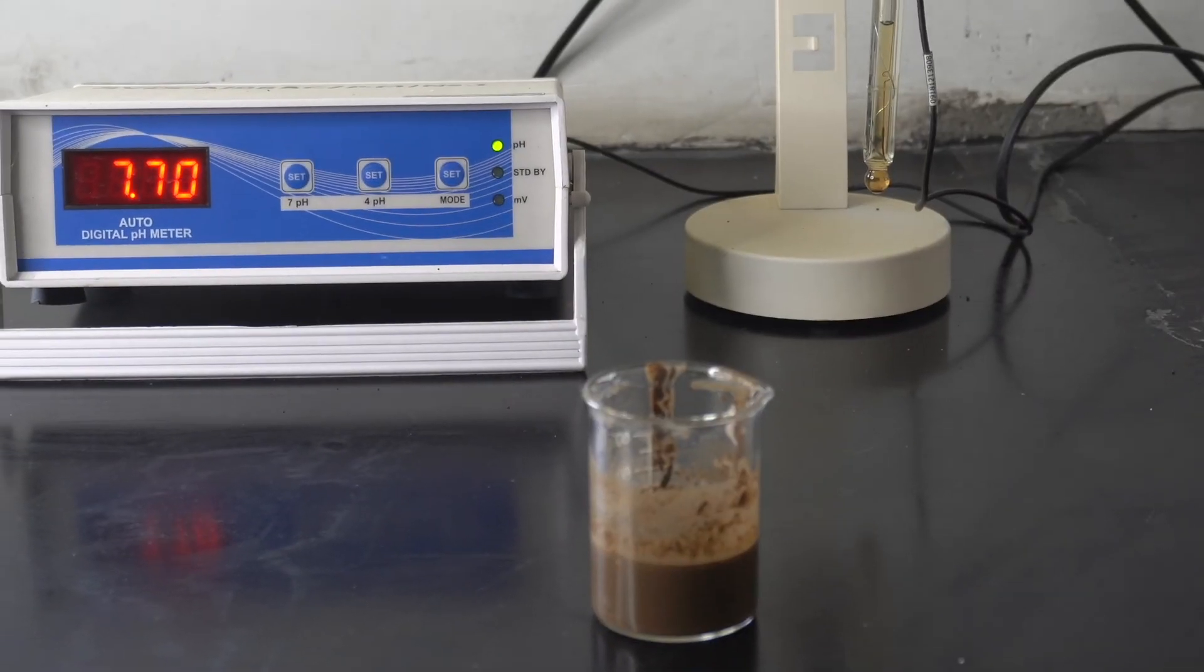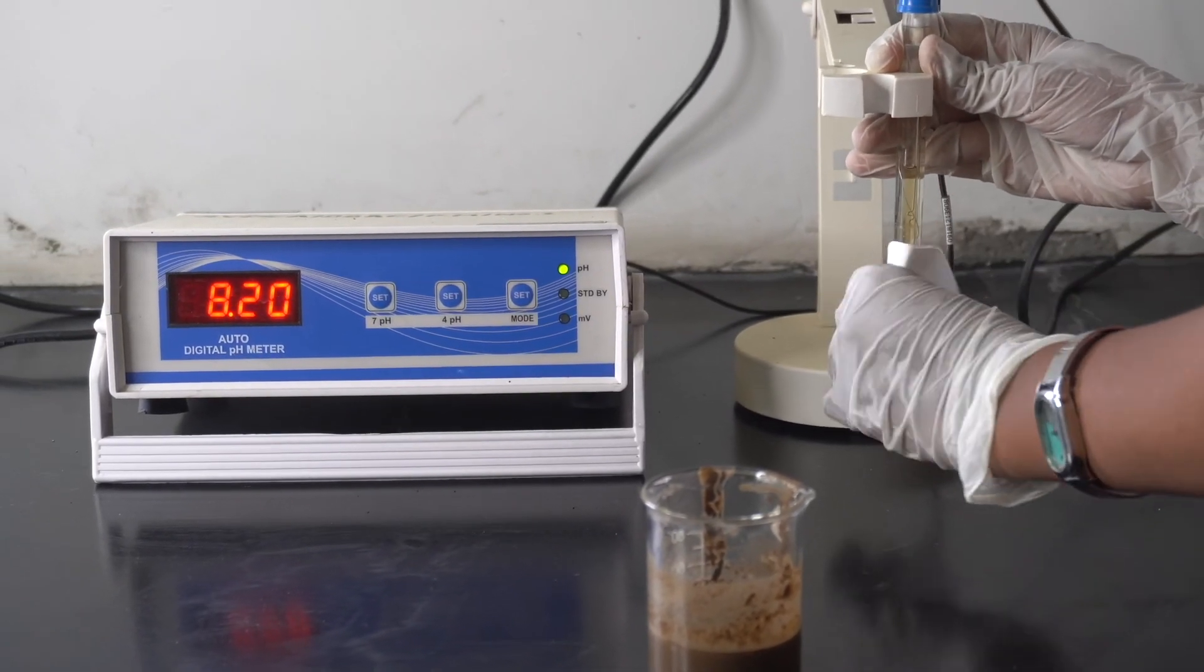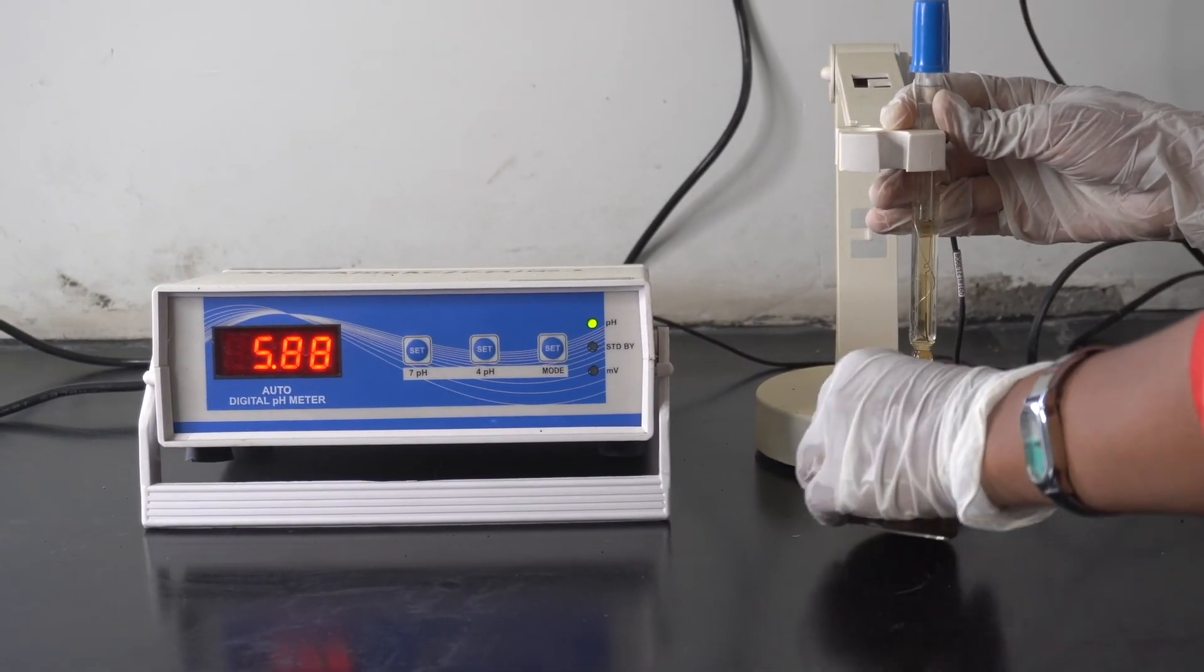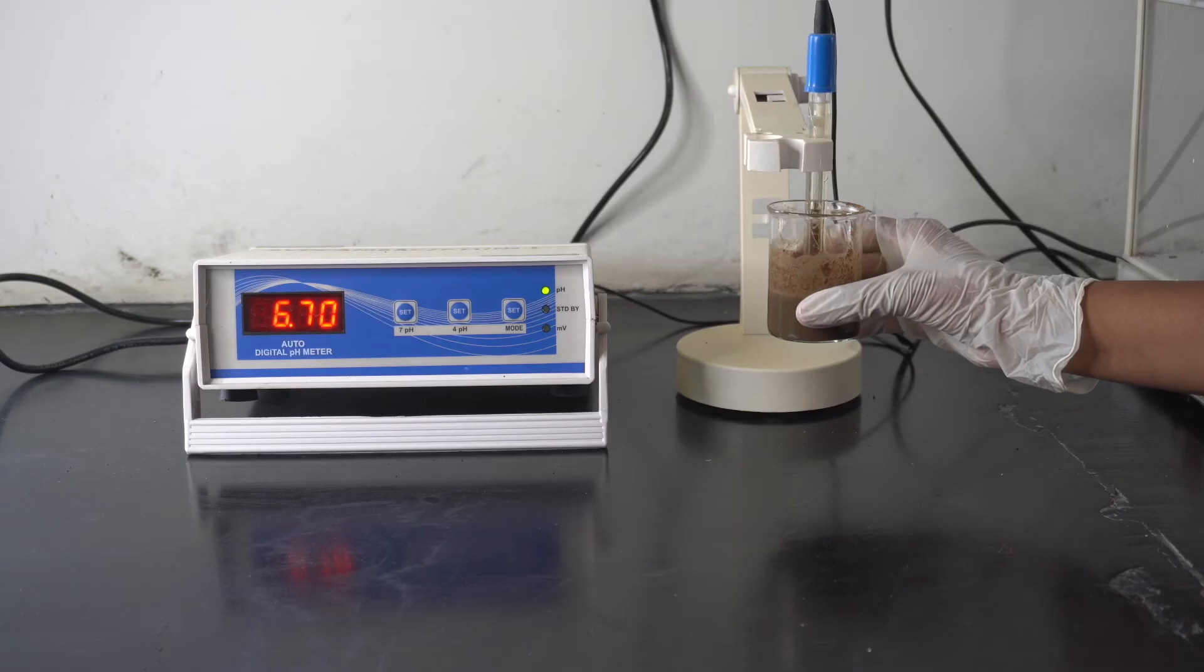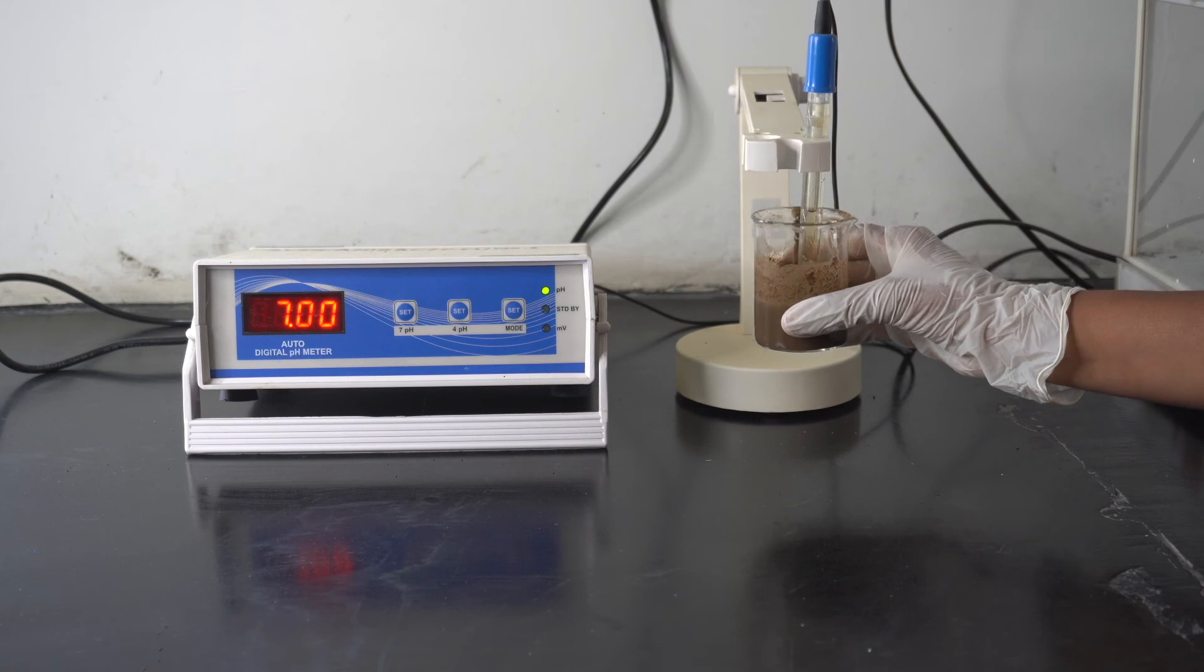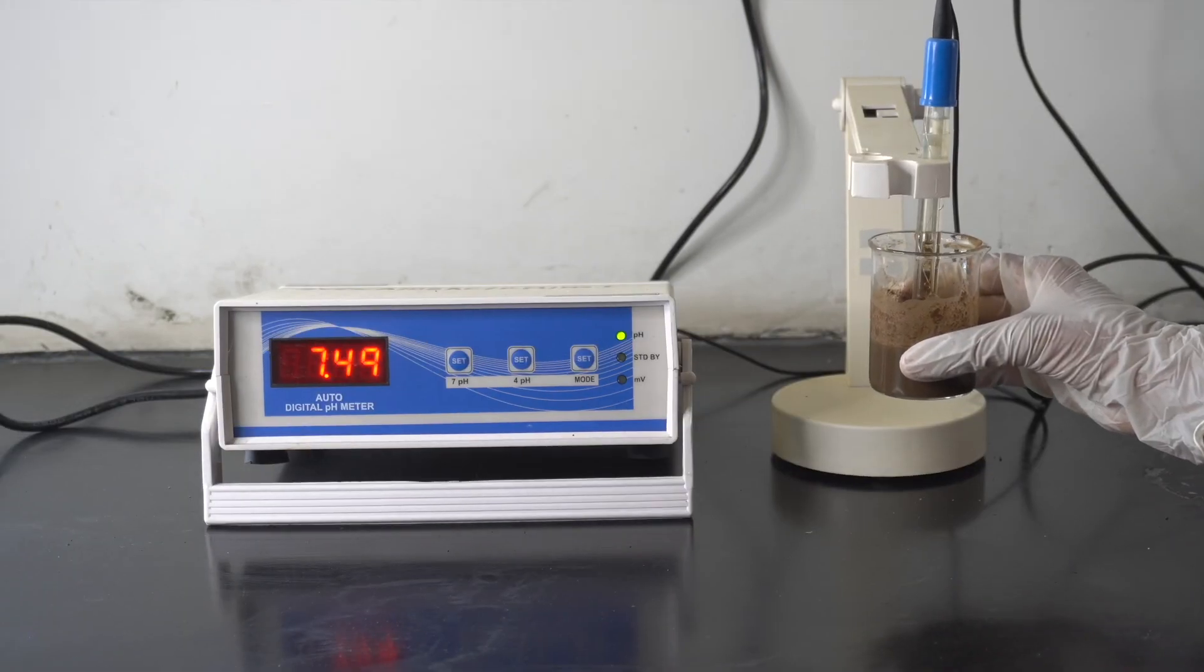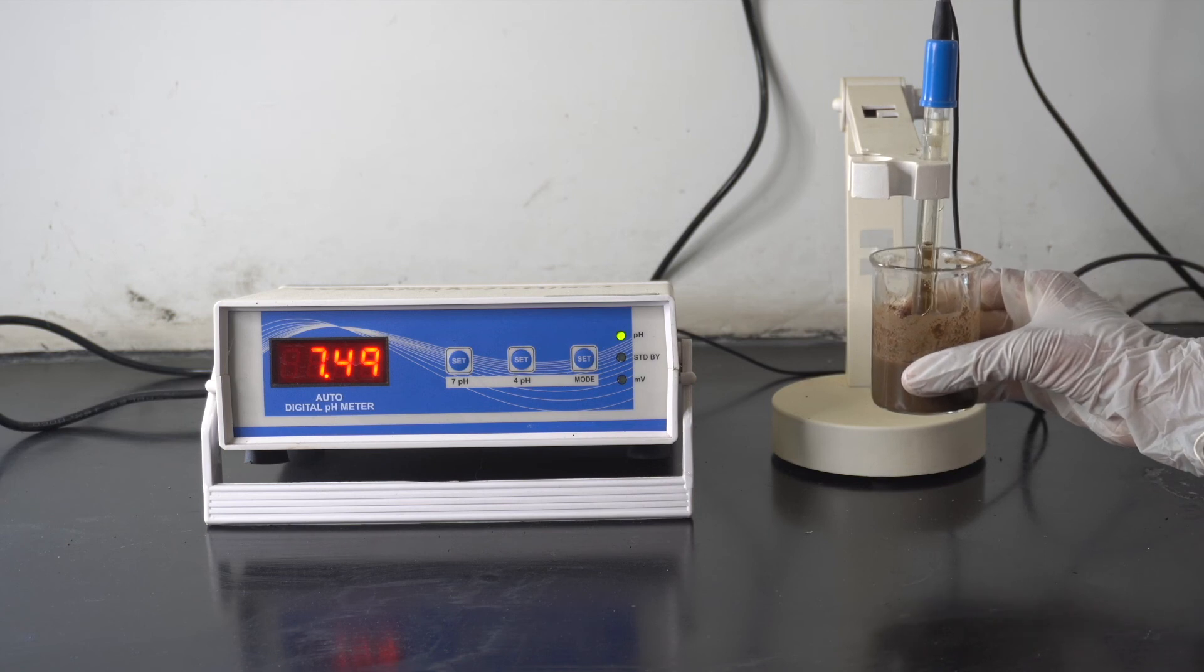Then stir the soil sample once again and blot dry the electrode by using tissue paper. Lastly, place the probe in the soil sample and measure pH. It will take 2-3 minutes to get a stabilized reading. Once we get the reading, record it in a notebook.